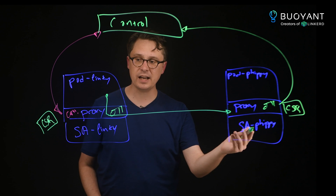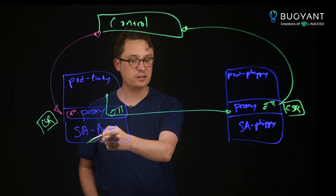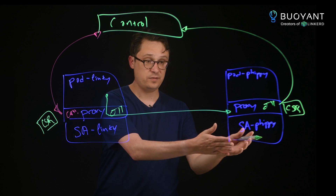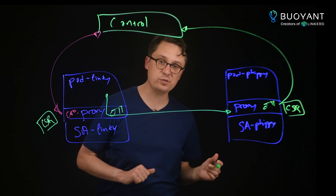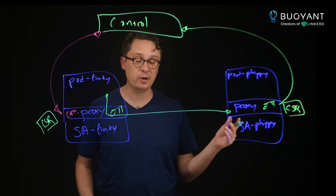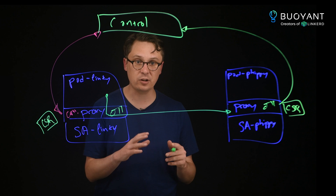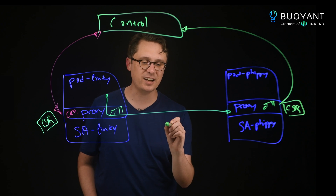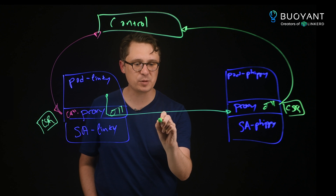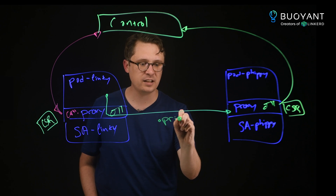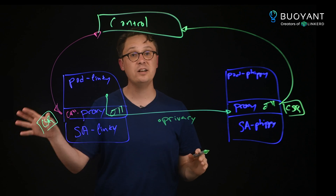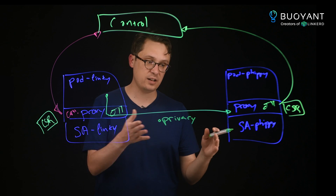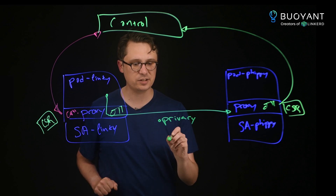Now FIPI has cryptographic proof that Linky is calling it and vice versa. Linky knows that it's talking to a FIPI pod and not another pod — it hasn't been redirected on the network and there are no middlemen or listeners snooping. So this gives us privacy. Anything in the network, anything else on the node can't decrypt this traffic. This is private between these instances.